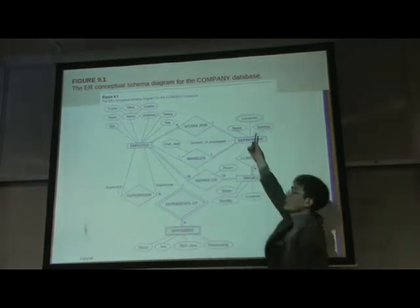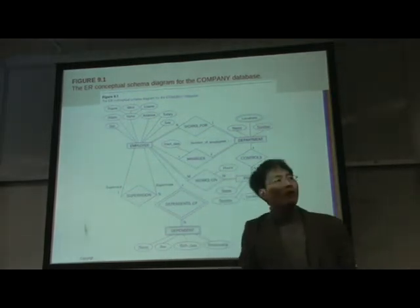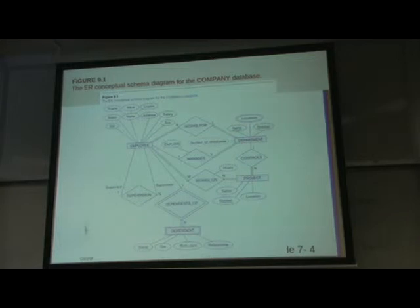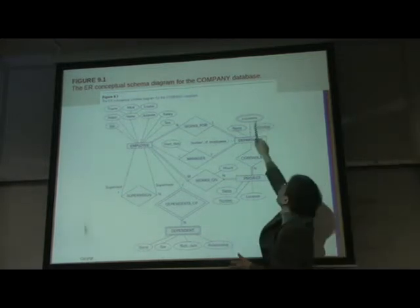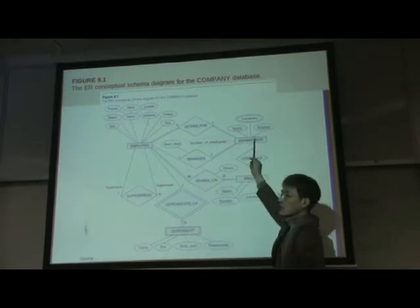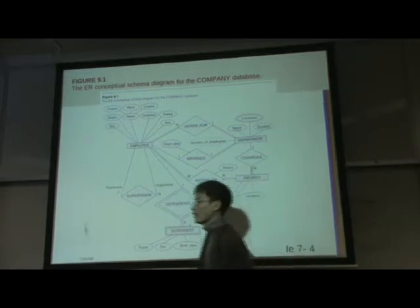What about location? It's a double oval, which means multiple values. However, the relational model does not allow multi-value — it should be a single atomic value. So this cannot be an attribute column here. We will discuss this later.